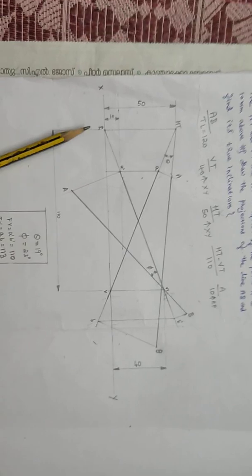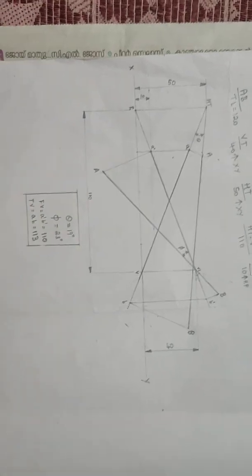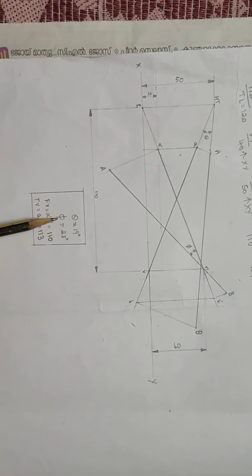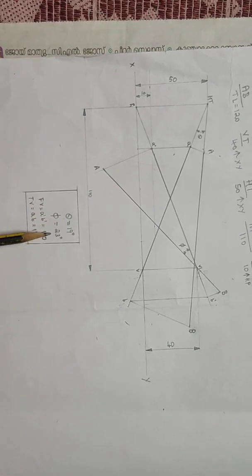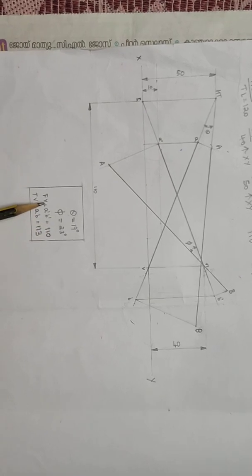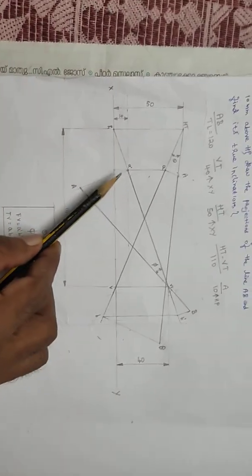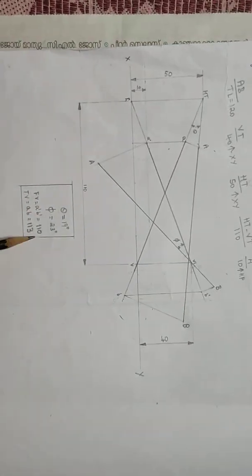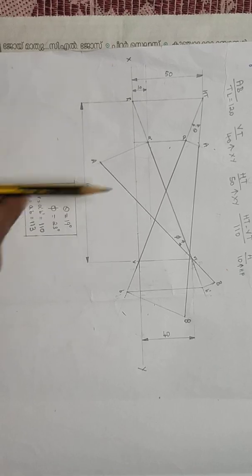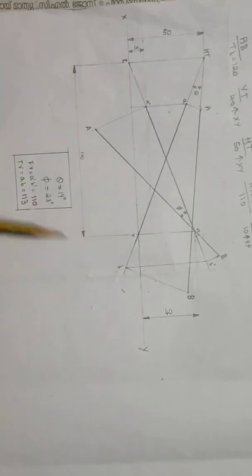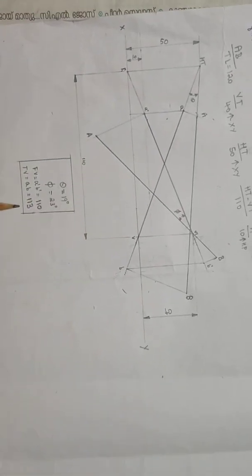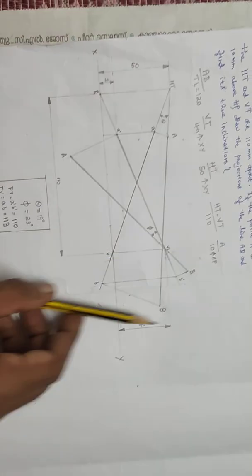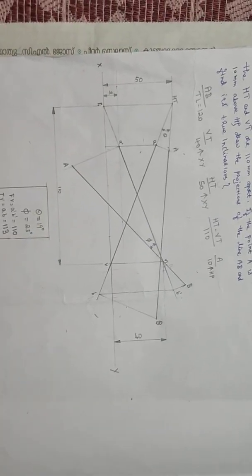The 50 mm dimension is confirmed. The answers are: theta = 19 degrees and phi = 23 degrees. Length of front view a'-b' = 110 mm. Top view a-b = 11.5 mm. Thank you.